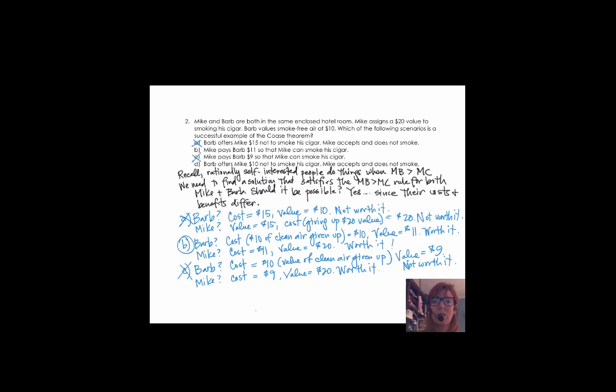And then D, Barb's cost is the $10 that she gives up in clean air, and she's compensated $10. She's pretty ambivalent. And Mike gives up $20 in value for smoking for $10. Not worth it for Mike. So B is the only solution that works for both sides.